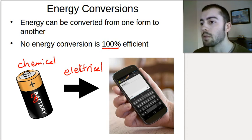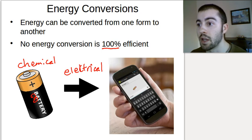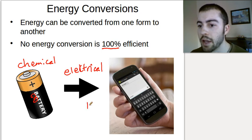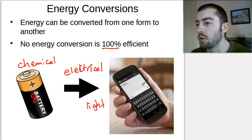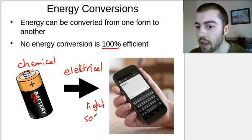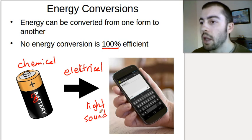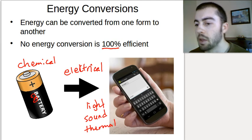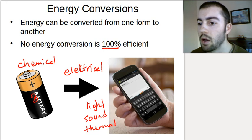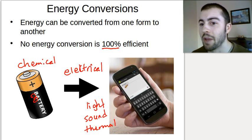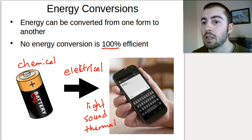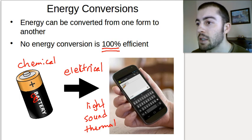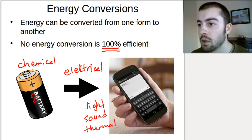What type of energy do we get out of our phones? Our phone has a screen that's projecting light, so we're getting light energy out of it. They also make noise, so we have sound energy. And realistically, there is a byproduct, which would be thermal energy — if you've ever had your phone in your pocket for a while, the battery gets hot. We have no purpose for our phones to be hot, but because conversions are not 100% efficient, some energy is essentially wasted as heat.